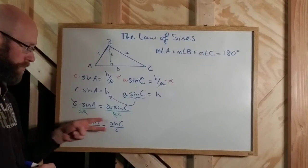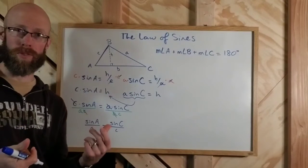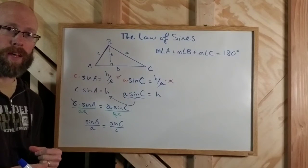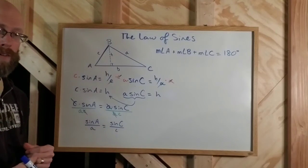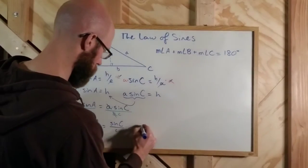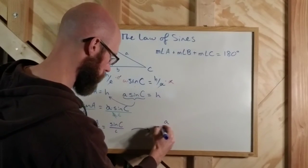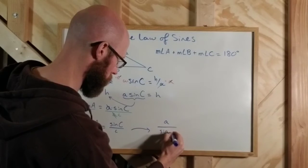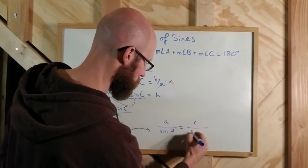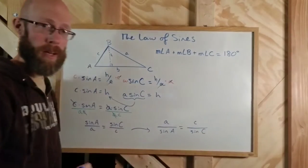Okay? Of course, these two fractions being equal to each other means their reciprocals are equal. It doesn't matter whether the sines are on top or on the bottom. And so, the more common form of this, little a over the sine of big A equals little c over the sine of big C.